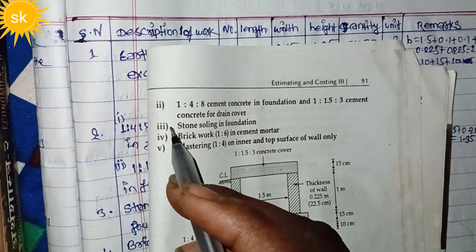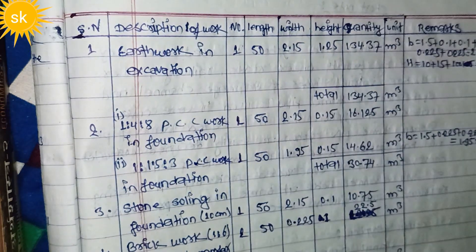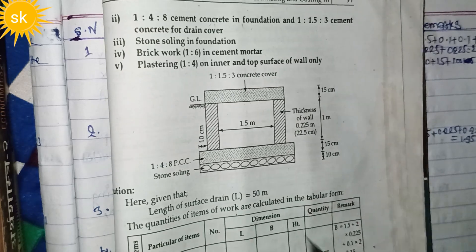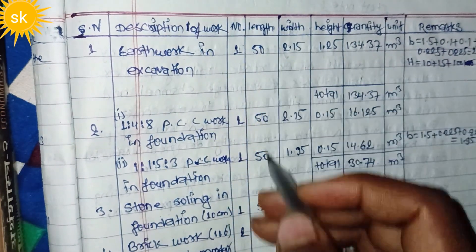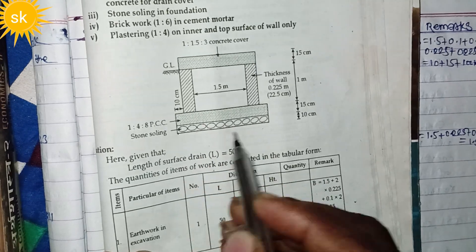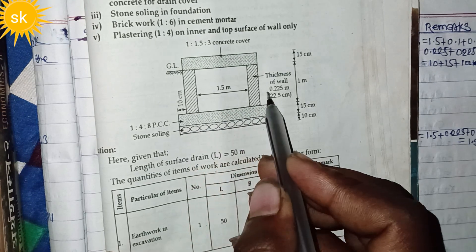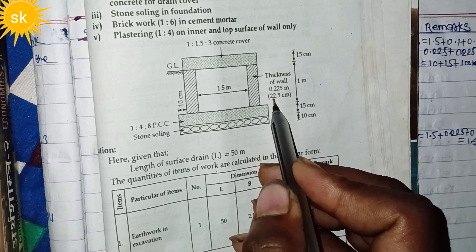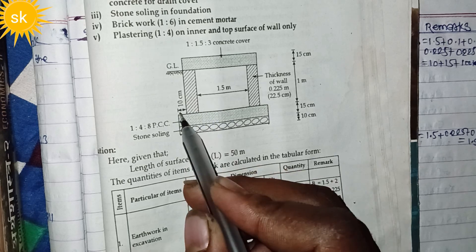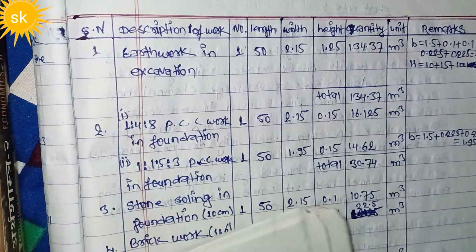Earthwork excavation. The point here is 0.30. At this point in the data, 10 centimeter data and centimeter data. We need to be able to work with these dimensions for the earthwork calculation.